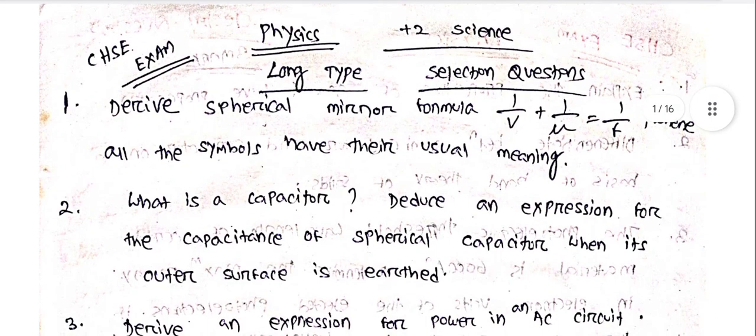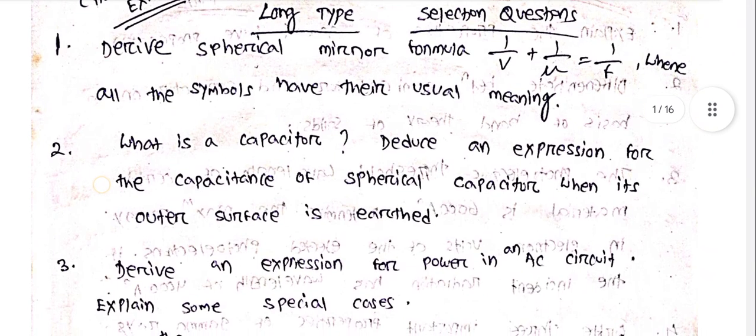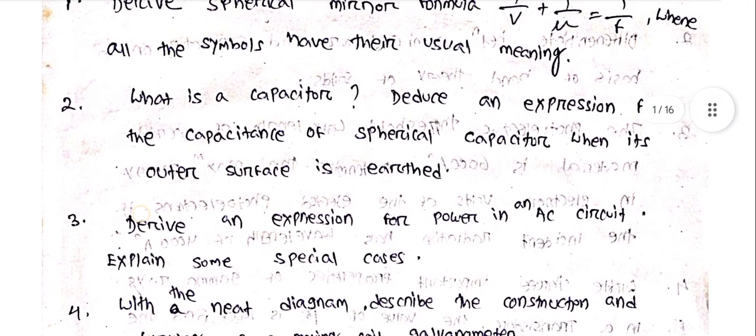Plus 2 is a long-type question. Physics long-type questions, because the question is 100%. So, derive spherical mirror formula 1 by V plus 1 by U equal to 1 by F, where all the symbols have their usual meaning.